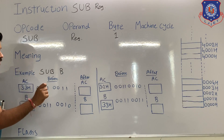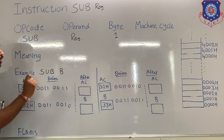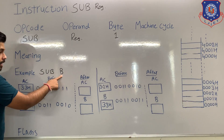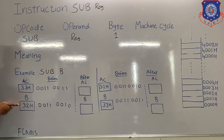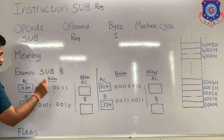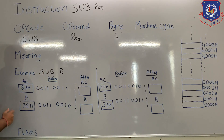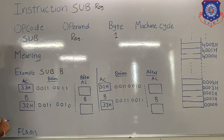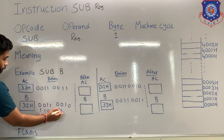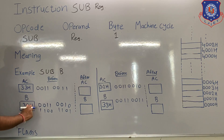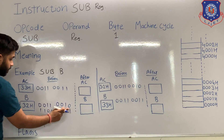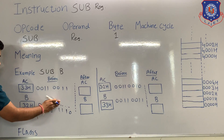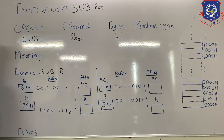To perform the subtraction, the microprocessor will use the 2's complement method. To subtract B from A, the microprocessor will first convert B into 2's complement. The content of B is 32H, which in binary is 00110010. The 1's complement is 11001101. Adding 1 gives the 2's complement: 11001110. This is the 2's complement of register B.